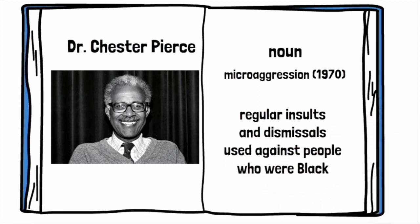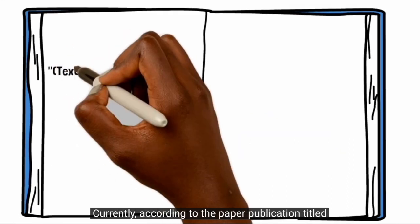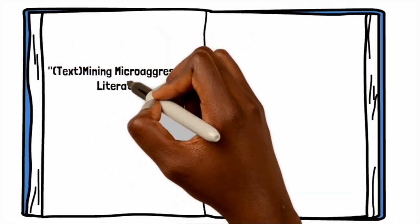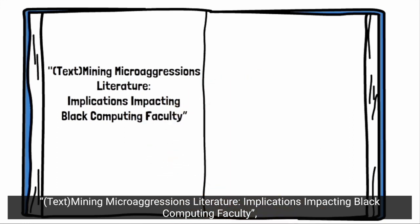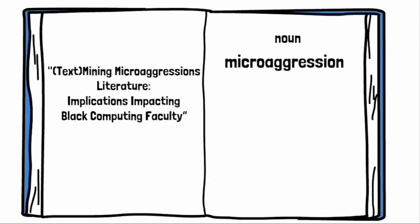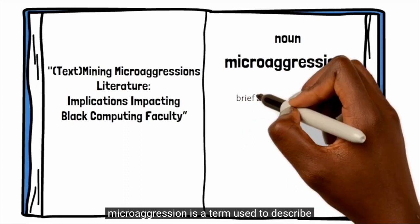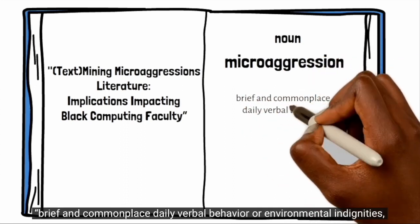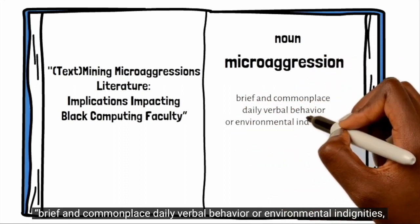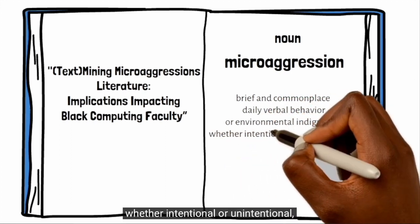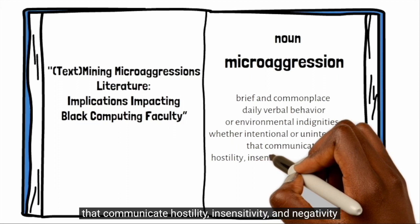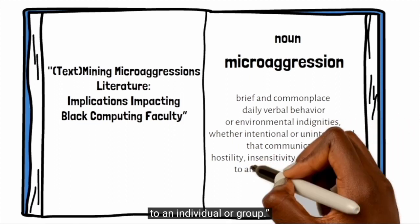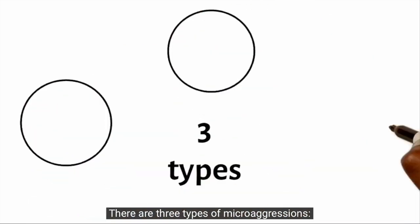Currently, according to the paper publication titled Text Mining Microaggressions Literature: Implications Impacting Black Computing Faculty, microaggression is a term used to describe brief and commonplace daily verbal behavior or environmental indignities, whether intentional or unintentional, that communicate hostility, insensitivity, and negativity to an individual or group. There are three types of microaggressions.